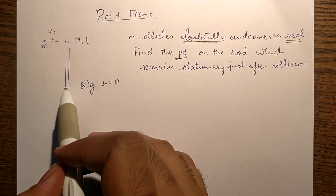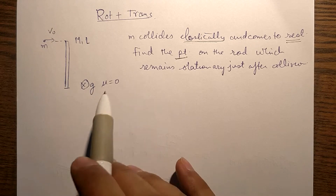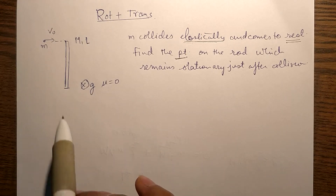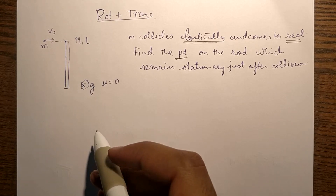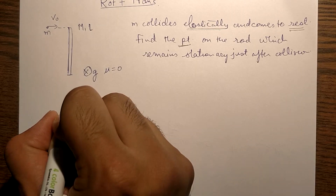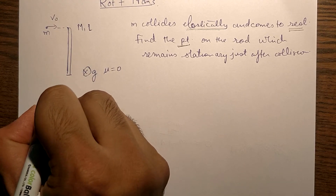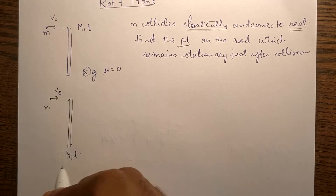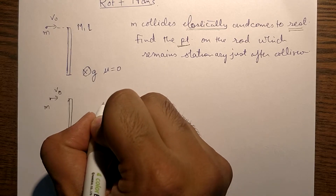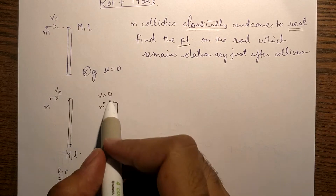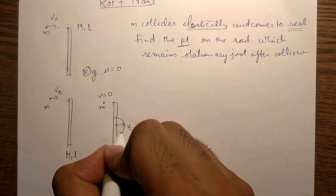After the collision, the motion of the rod is complicated. So what we will do is look at its translation motion and rotation motion separately. The velocity of any point is the vector sum of velocity due to translation and velocity due to rotation. After collision, the small m comes to rest, and the rod translates with Vcm and rotates with omega about its center of mass.